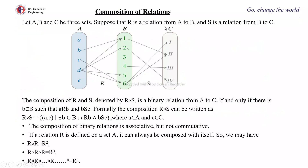Next is the composition of relations. Given three sets A, B, C, where R is a relation from A to B and S is a relation from B to C, the composition of R and S — denoted R∘S — is a binary relation from A to C if and only if there exists a b in B such that a is related to b via R and b is related to c via S. Formally, R∘S = {(a,c) : there exists b in B such that (a,b) ∈ R and (b,c) ∈ S}.